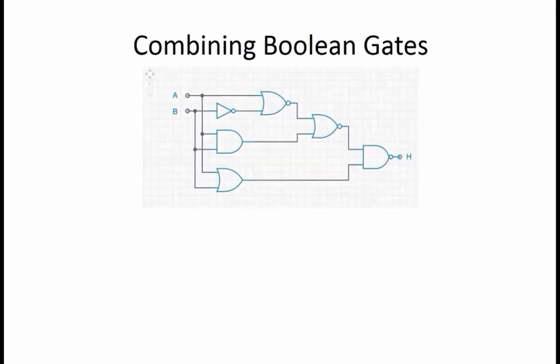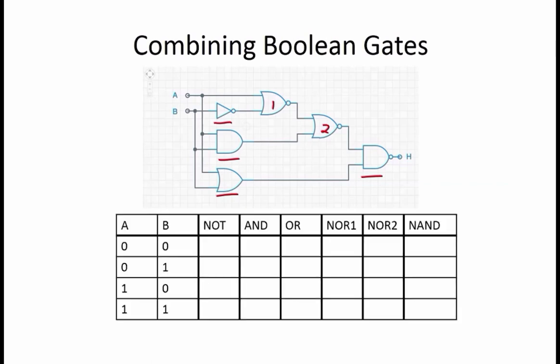The output of one Boolean gate can be used as an input to another Boolean gate, so multiple gates can be used to generate more complex functions. For example, here we have a circuit that consists of two inputs and six gates, which are an inverter, an AND gate, an OR gate, two NOR gates and one NAND gate. In order to figure out what this combination of gates produces as its output, we can work incrementally through the circuit.